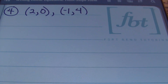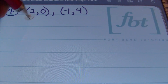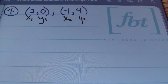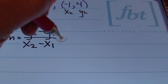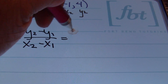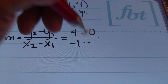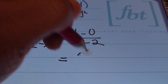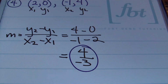In problem number four, we're given two points on the line. Since point-slope form requires a point and a slope, we first find the slope using the slope formula. Labeling the two points as x1, y1 and x2, y2, the slope formula is m equals y2 minus y1 all over x2 minus x1. Plugging in, we get 4 minus 0 over negative 1 minus 2, which gives positive 4 over negative 3, so the slope is negative four-thirds.